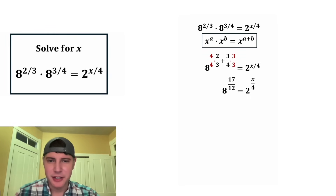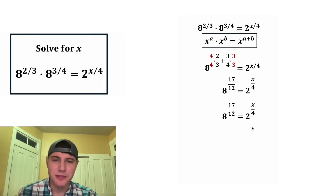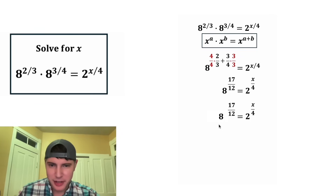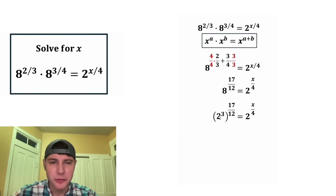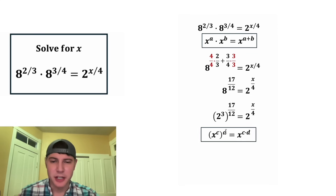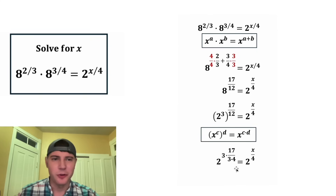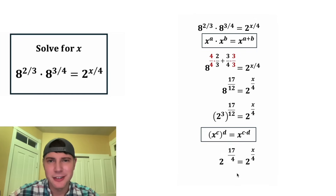Now let's smush everything together. The left-hand side has a base of eight and the right-hand side has a base of two. Let's give them the same base. Let's rewrite this eight as two cubed. Now we have two to the power of three, whole thing to the power of 17 twelfths. If you have a base to an exponent to an exponent, you can multiply those exponents. We can change this 12 into three times four, so this three on top and this three on bottom will cancel each other out.